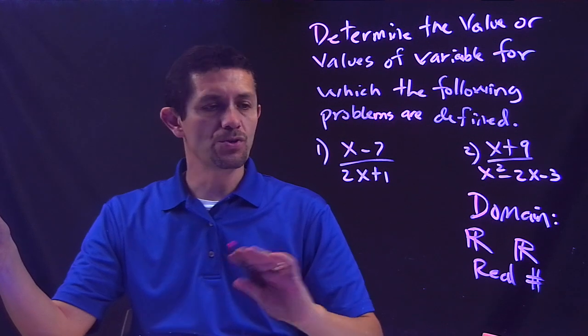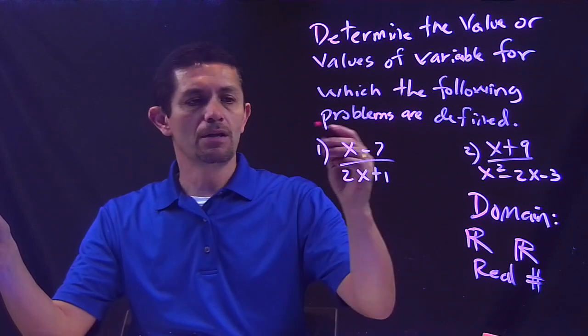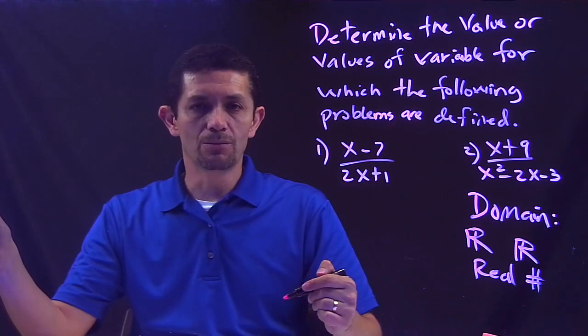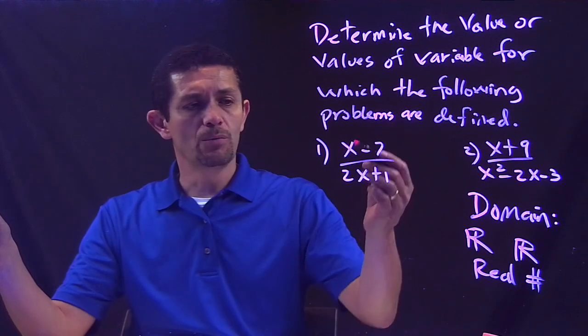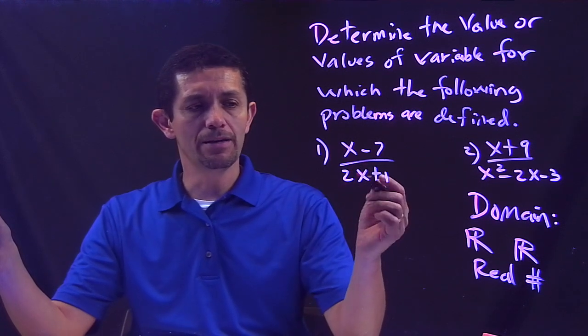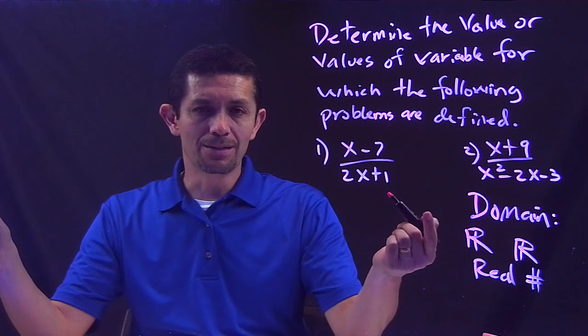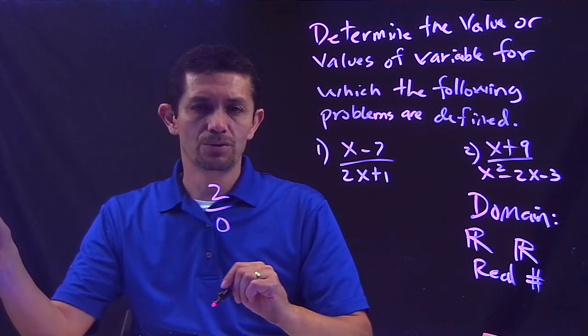We start with that, so I'm assuming we start with all real numbers except whenever we have a rational function. The idea is that I'm not able to divide by 0.